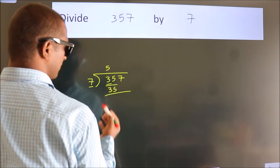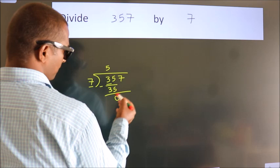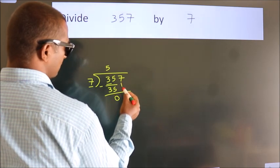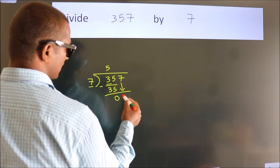Now we should subtract. We get 0. After this, bring down the next number. So 7 down.